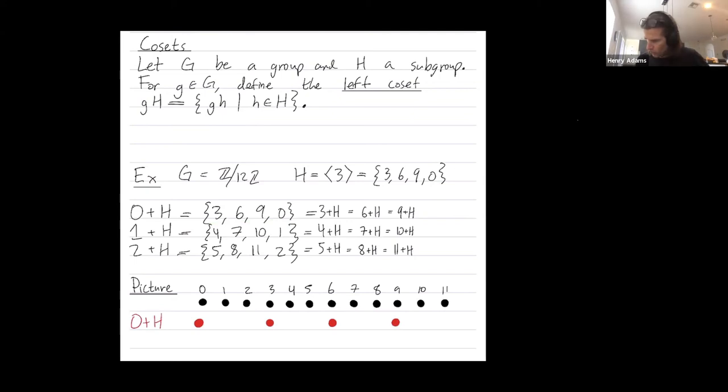The coset 1 plus H is going to necessarily contain 1 because 1 is G. And then I combine 1 with the identity 0 and I get 1. So the coset 1 plus H is always going to contain 1, and it also contains 4 and 7 and 10.